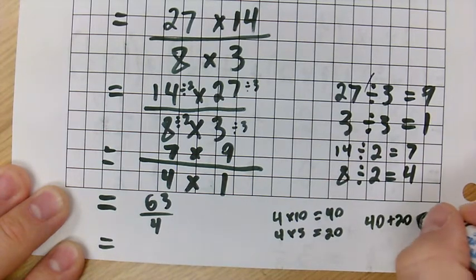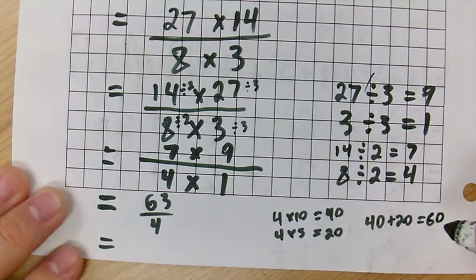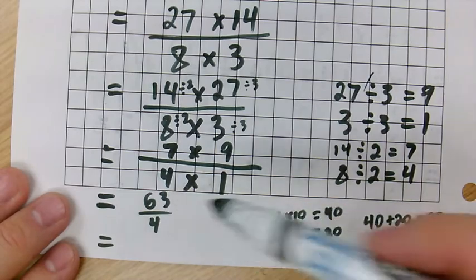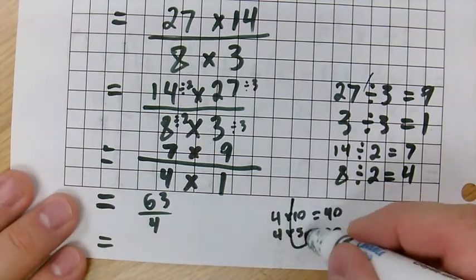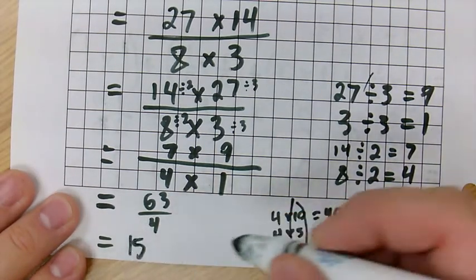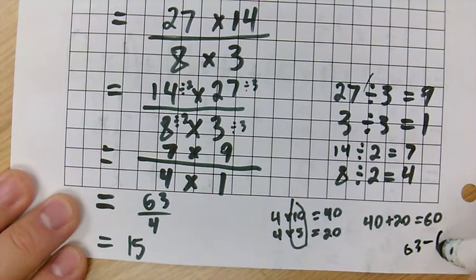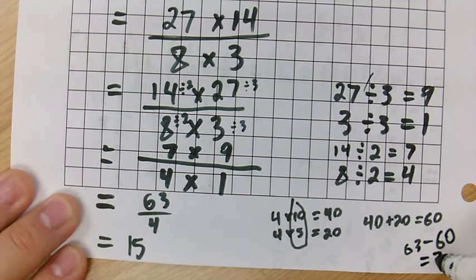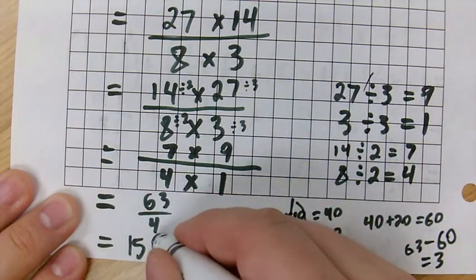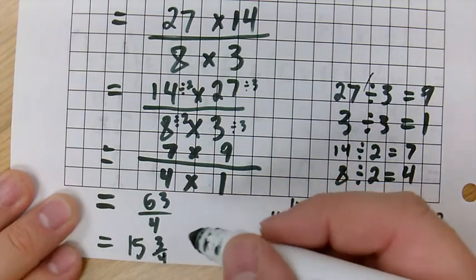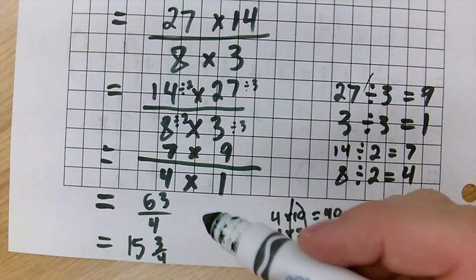and 40 plus 20, those numbers there, is 60. Which, if I were to add 4 to it, it would be too high for that. So, that means that this 10 plus 5 is my 15 that's there. And how many are left over? Well, 63 subtract 60 is 3, so that means there's 3 quarters left over. So, 15 and 3 quarters is my answer for this question.